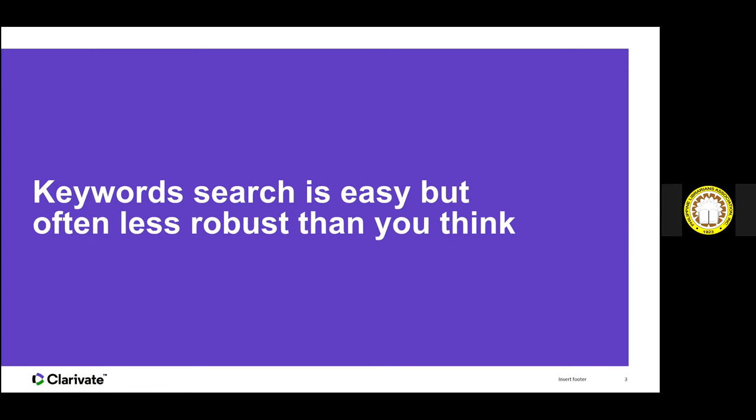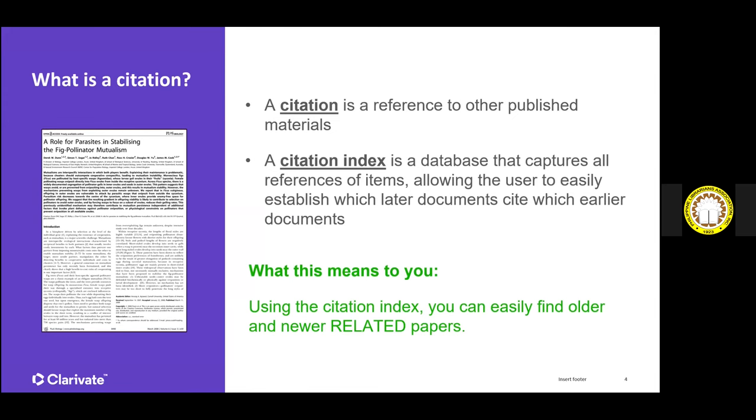Remember when I was talking about finding gaps in research topics? Those gaps cannot be identified just by identifying keywords. To identify the gaps, you need to identify the evolution of that research topic — when was the technology first discovered, how has it been applied, what has failed, what has succeeded — in order to identify those gaps you want to plug. That's where Web of Science comes in, talking about citations.